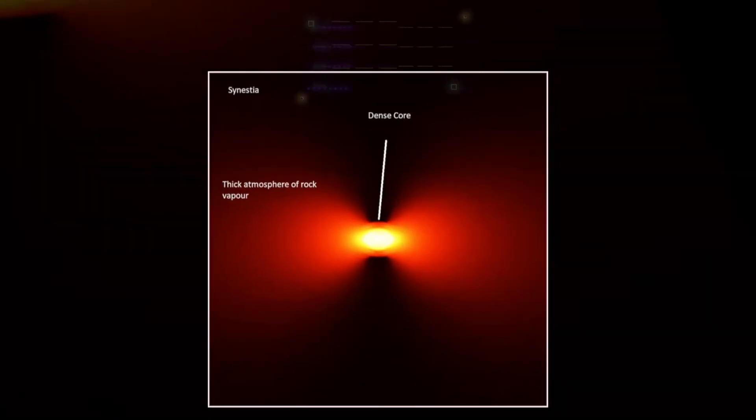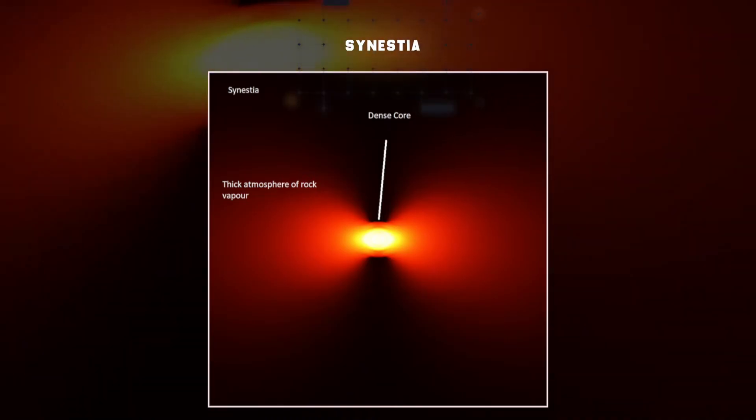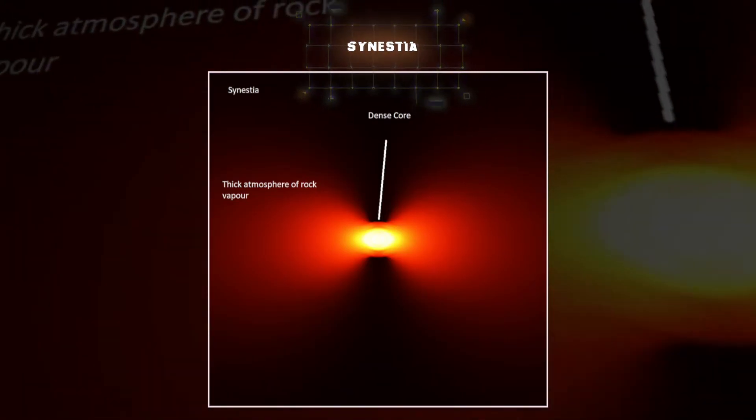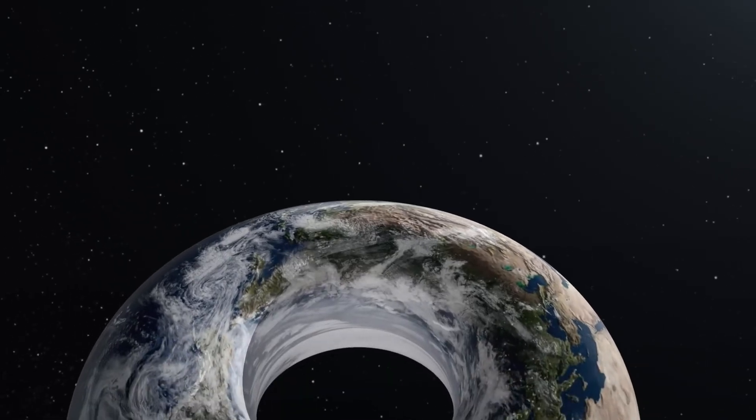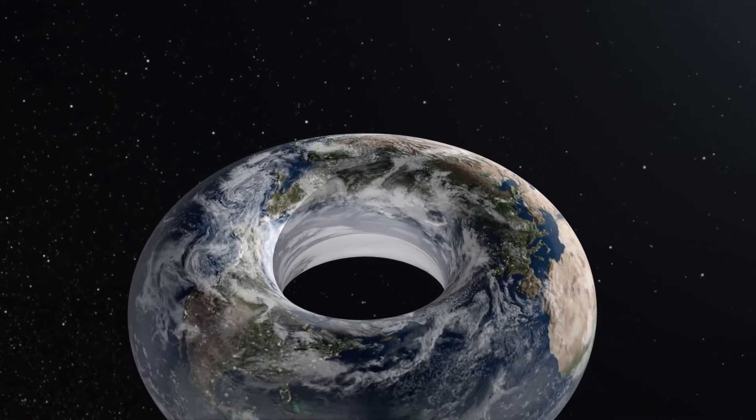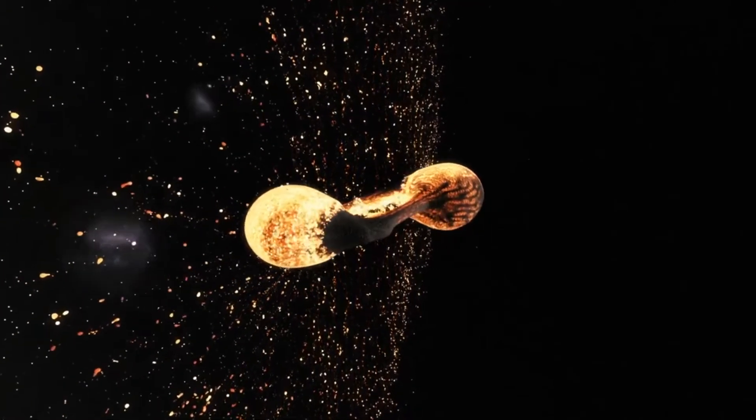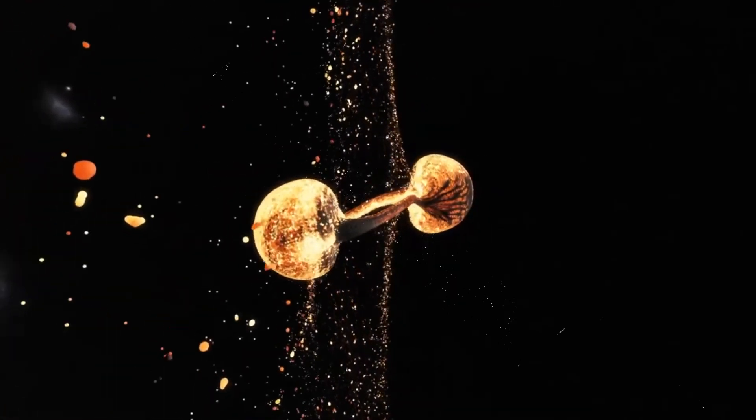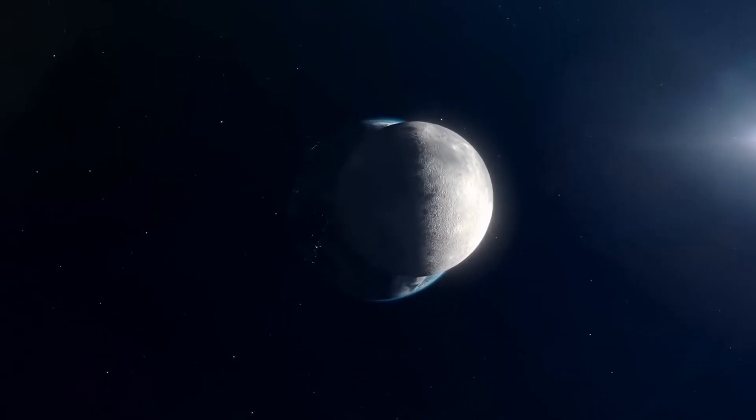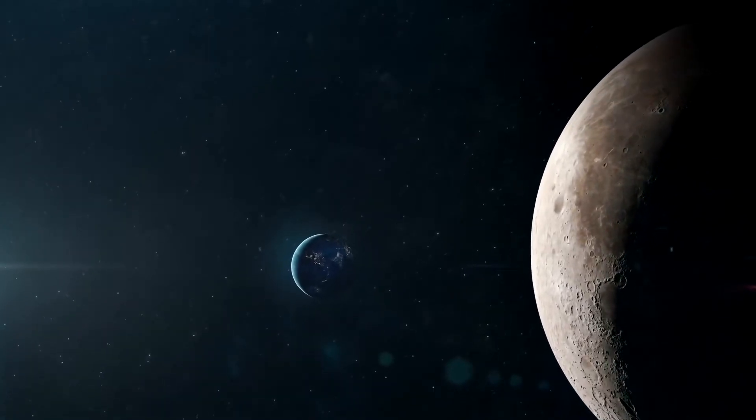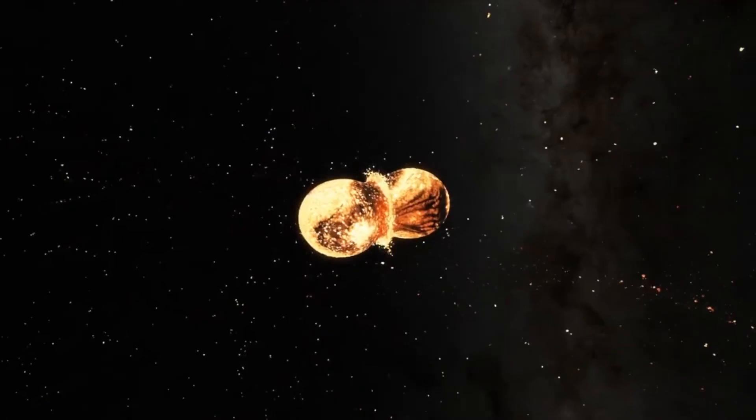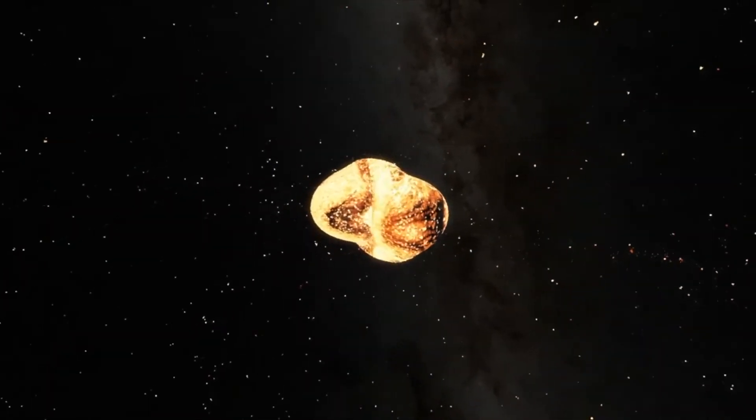Within the group of scientists studying synestias, some researchers believe that the Earth may have even taken this form in the very beginning, which could also answer the question as to the origins of the Moon. The Earth and the Moon are chemically very similar, with only some minute differences lending evidence to the theory. There are several ways in which a synestia can form,